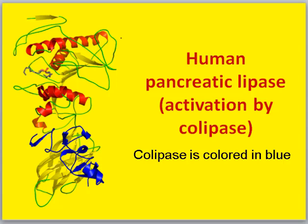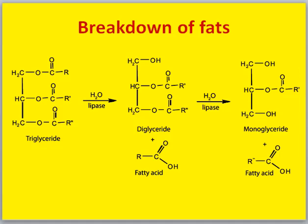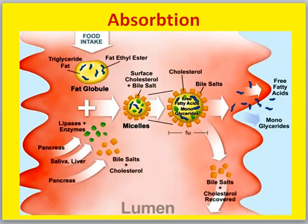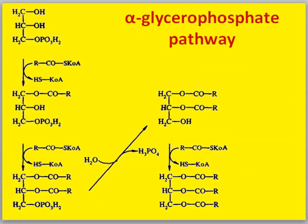Human pancreatic lipase is activated by colipase, which is colored in blue. The process involves emulsification, breakdown of fats, absorption, and lipid resynthesis in cells of intestinal wall epithelium via the beta-monoglyceride pathway and the alpha-glycerophosphate pathway.